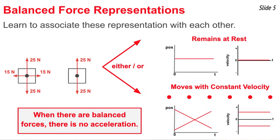You could also associate balanced force situations with an object moving with a constant velocity, neither changing its speed nor its direction. The dot diagram would show equally spaced dots. The position-time graph would show a straight diagonal line sloping upward or downward depending on whether the object moves in the positive or negative direction. The velocity-time graph would show a horizontal line with zero slope, located above the time axis for positive direction or below it for negative direction. Being able to associate these various representations with one another will be critical to your success in physics.